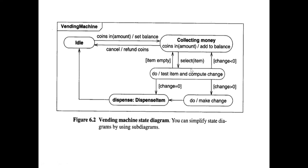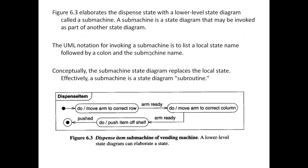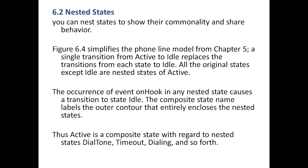So we saw expanding states again — 'dispense item' is being called as another state diagram, a submachine of the vending machine. You give a reference to it, and the notation for invoking a submachine is to list a local state name followed by a colon and the submachine name. If you want to call a submachine, you give a local state name followed by the submachine name.